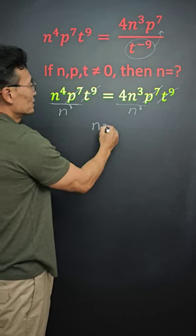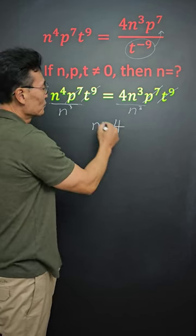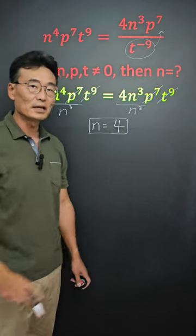Then we have n left and we only have the 4 left. So our final answer is n equals 4.